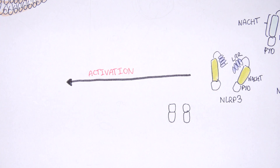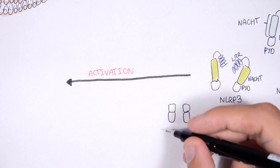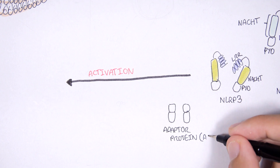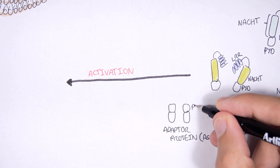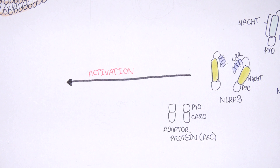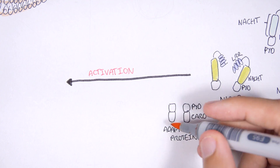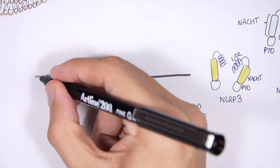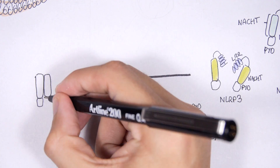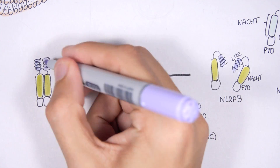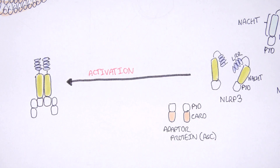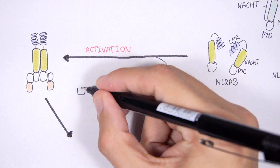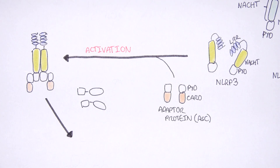When activated, NLRP3 will bind with other proteins known as adapter protein ASC, which is made up of a pyrin domain and a CARD domain. This process of binding to each other is known as oligomerization. The pyrin domain of the adapter protein ASC binds to the pyrin domain of NLRP3, forming this oligomeric structure.